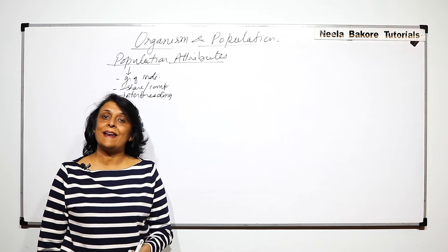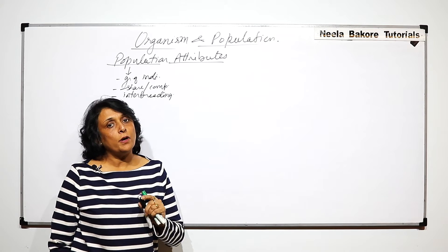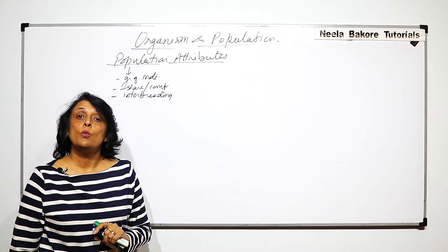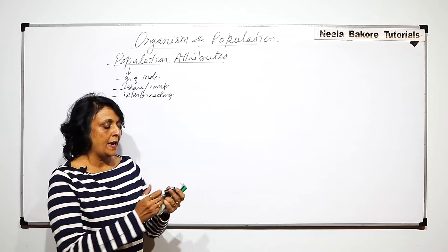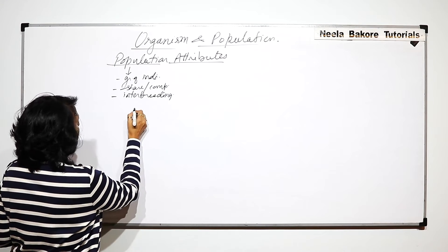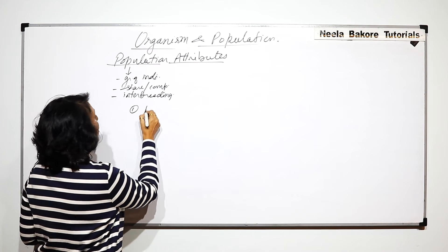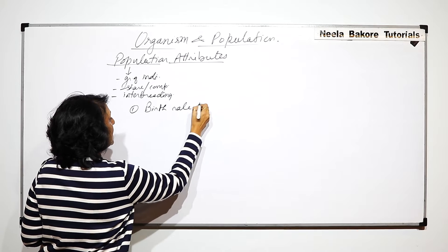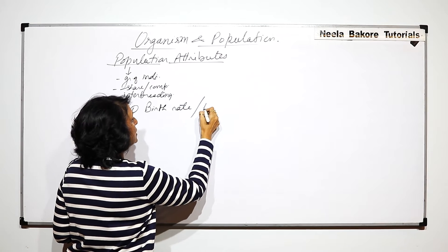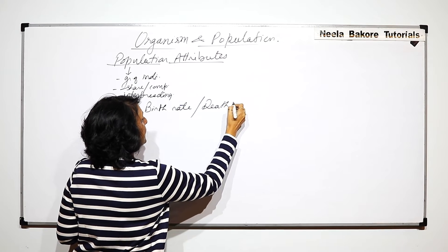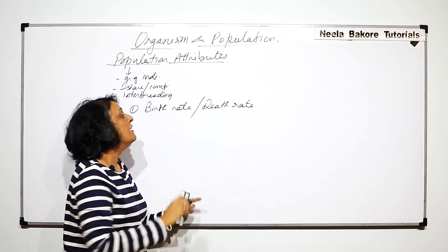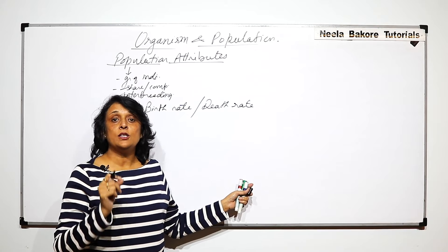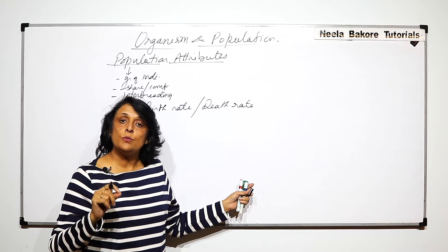Attributes are certain characteristic features or points which are associated only with the population, not with the individual. We will take a few important attributes. The first one is called birth rate, and along with this we will also talk about death rate. These are population attributes, meaning birth rate and death rate are discussed only when talking about a population.